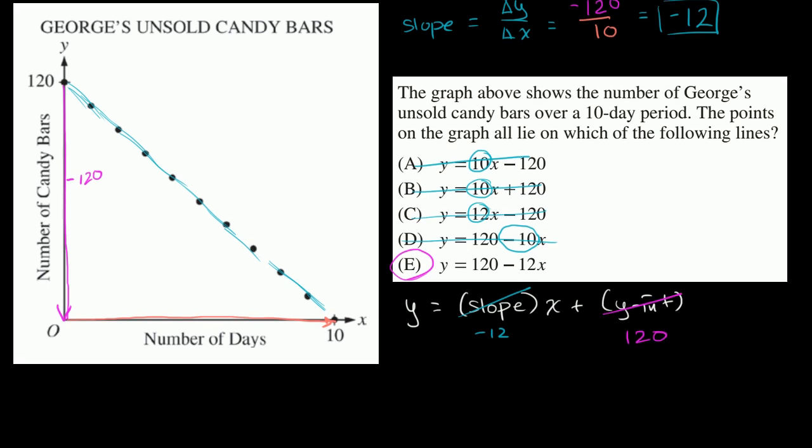So the equation of our line is going to be y is equal to, even if we didn't have these choices, y is equal to negative 12 times x plus 120. Or you could obviously swap these two around and write it as 120 minus 12x, which is exactly what they did right over here.